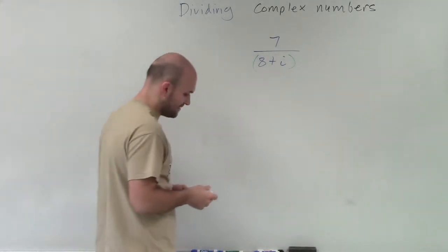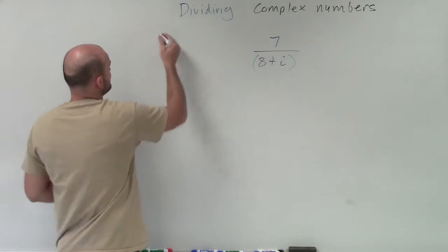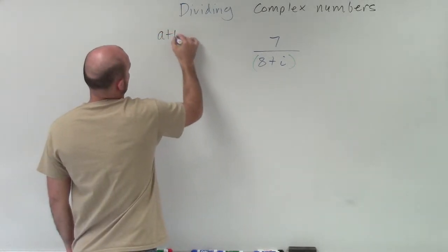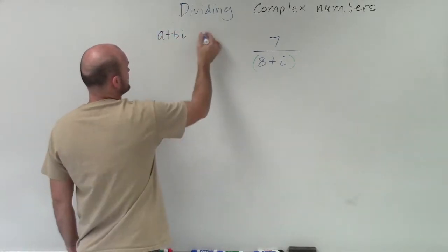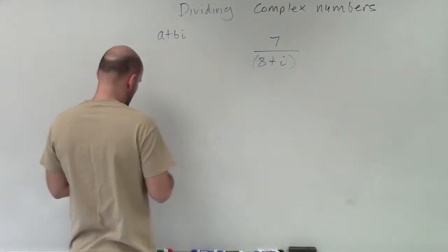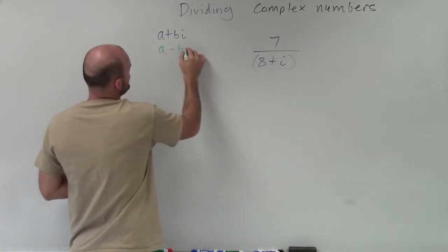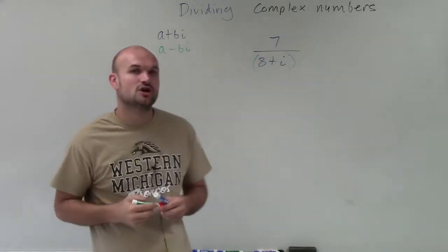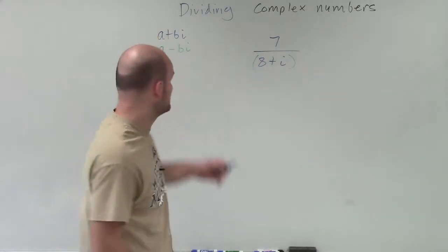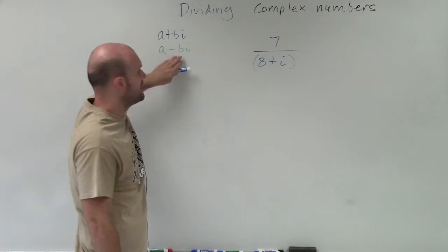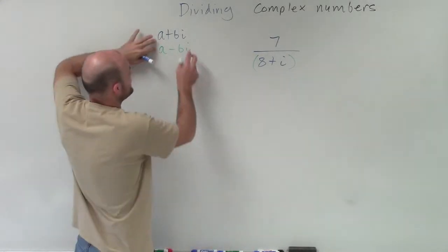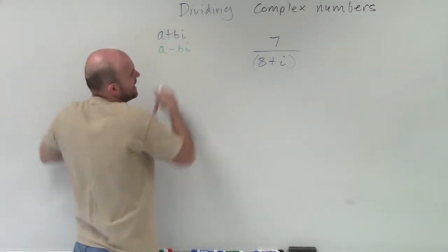So the conjugate, if I have a plus bi, the conjugate is going to be in the form of a minus bi. All right, and we'll show you what happens when we take a value and we multiply it by the conjugate. So it's going to be the exact same value, except it's just going to be the opposite sign.